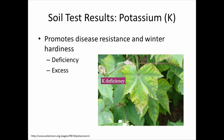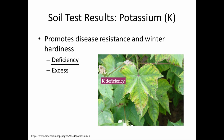Potassium is another macronutrient that's often deficient. It is associated with disease resistance, winter hardiness, and heat and drought stress tolerance — so it's often associated with a lot of plant stresses. Deficiencies are hard to spot. They usually are associated with a whitening or yellowing of the interveinal areas, and sometimes the leaf margins will get a black look to them, as you can see in the picture. It's a very subtle deficiency; this is a pretty extreme picture. Soil testing is a good way to make sure you have enough potassium.